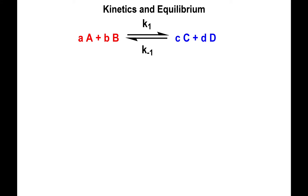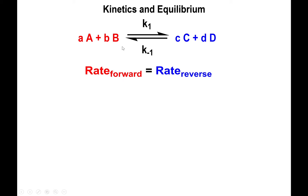The one connection I'll make between kinetics and equilibrium is that technically, when you are at equilibrium, the rate at which reactants A and B are reacting to form products is equal to the rate by which the products are turning back into reactants. A state of equilibrium is one where these two rates are equal and you see no net change.